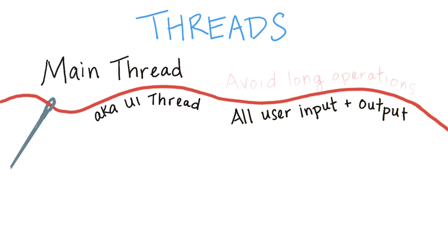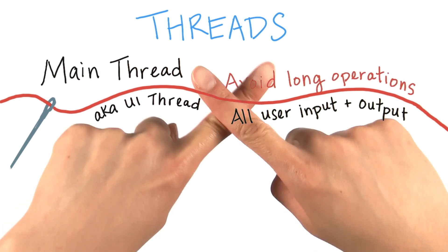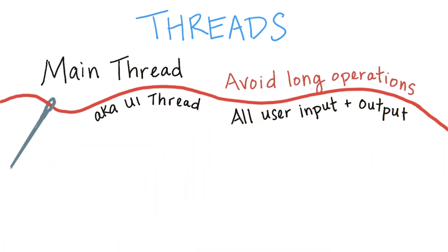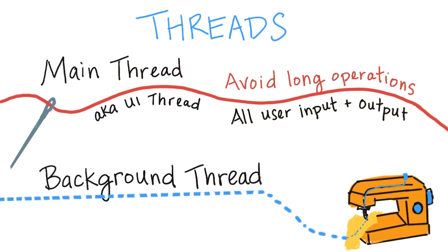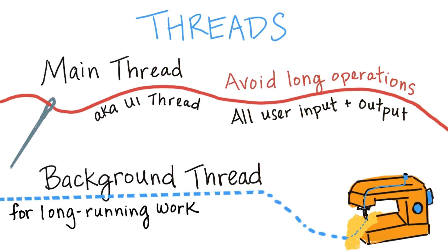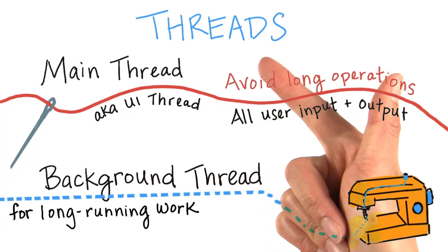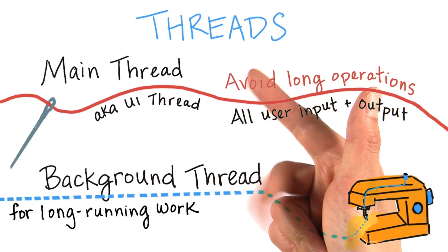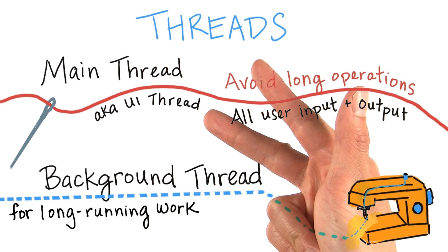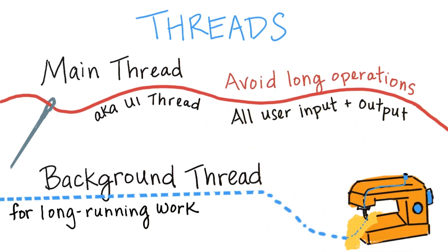Thus, we want to avoid any time-consuming operations here. Otherwise, the UI is going to stutter. Instead, kick off a background worker thread if you have to do some long-running work. This includes doing network calls, decoding bitmaps, or reading and writing from the database.